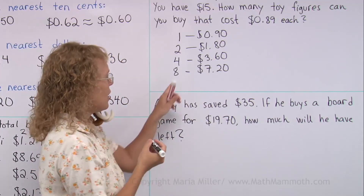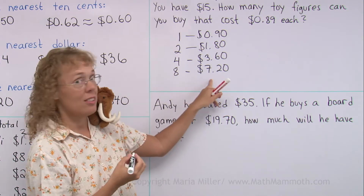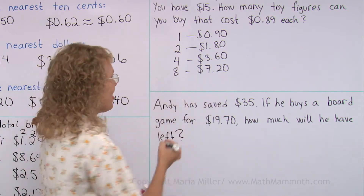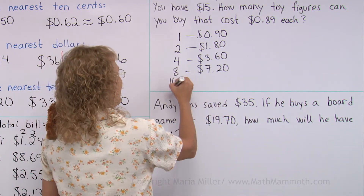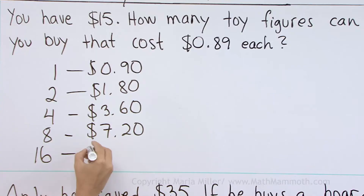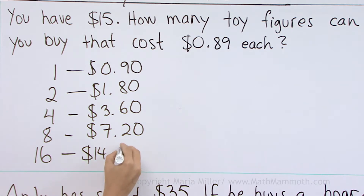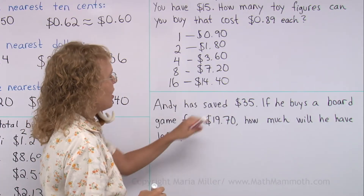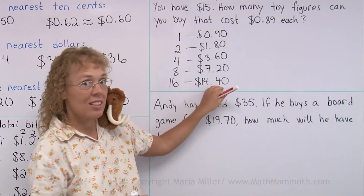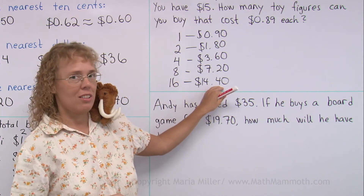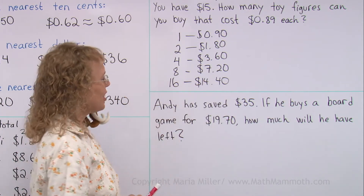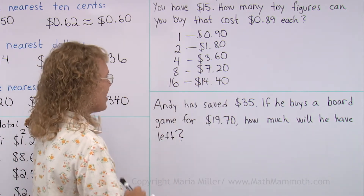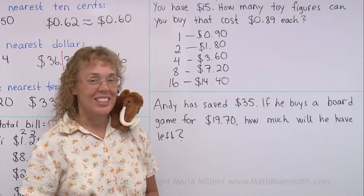If I double that, I'm going to be near 15 dollars. Sixteen figures would cost $14.40. Adding 90 cents to that goes over $15. So my estimate is you could buy 16.